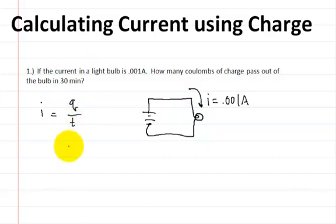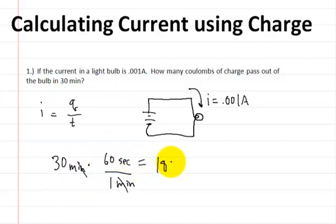Well, coulombs are in seconds, so we're going to have to convert from minutes. 30 minutes, and we're going to convert minutes into seconds. There is 60 seconds in one minute. So the minutes cancel, and we're going to multiply 30 times 60, which is 1,800 seconds.